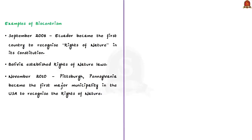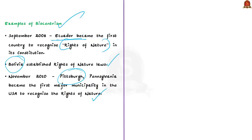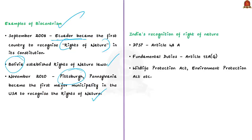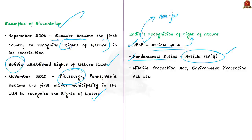Let us see examples where biocentrism has been absorbed into jurisprudence. In September 2008, Ecuador became the first country to recognize rights of nature in its constitution. Bolivia also established rights of nature laws. In November 2010, the city of Pittsburgh, Pennsylvania became the first major municipality in the United States to recognize the rights of nature. In India, the Directive Principles of State Policy through Article 48A and the Fundamental Duties through Article 51A(g) have affirmed the rights of nature. However, both DPSP and fundamental duties are not justiciable, so India needs to do more in endorsing rights of nature in line with Article 21.